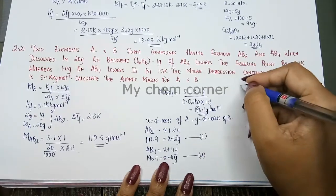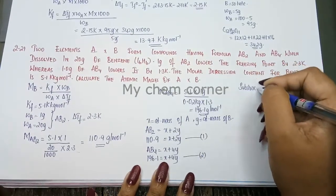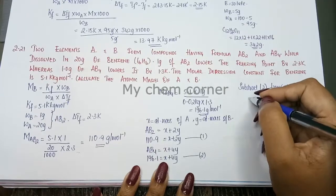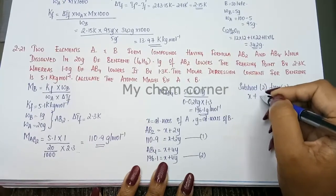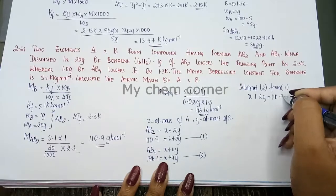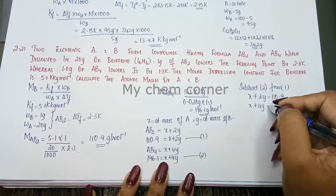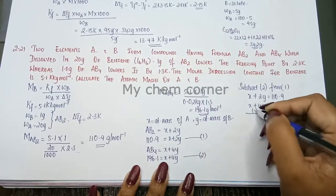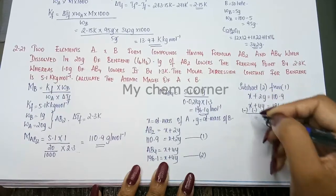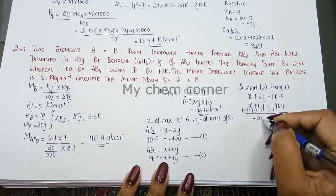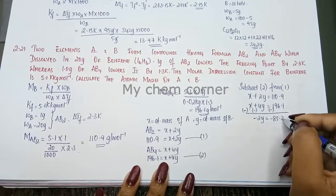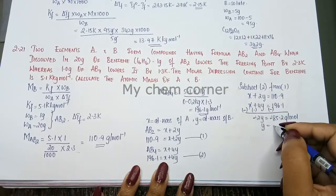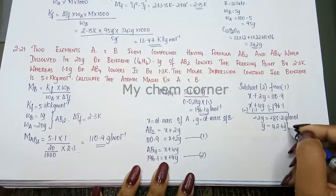Now what we will do is we are going to subtract equation 2 from 1. When you do that, X plus 2Y is equal to 110.9 and X plus 4Y is equal to 196.1. When you subtract this, this will become negative, this will also become negative. So X and X will get cancelled. Now you have minus 2Y is equal to minus 85.2 gram per mole. Y is equal to, minus and minus will get cancelled, Y is going to be 42.6 gram per mole.